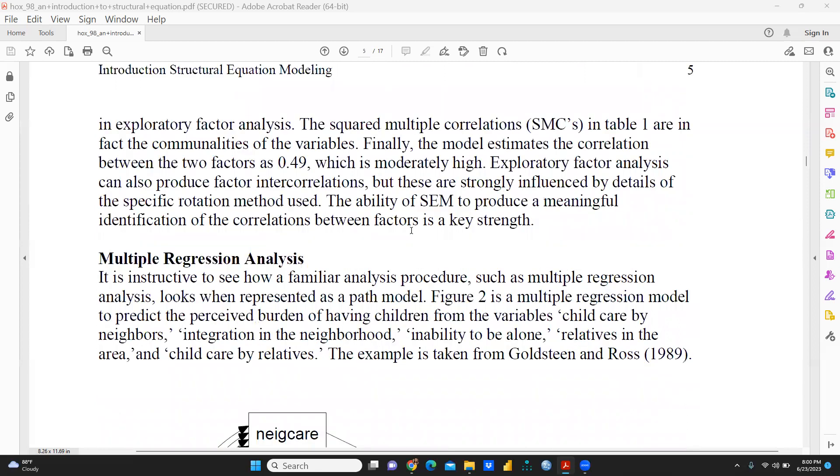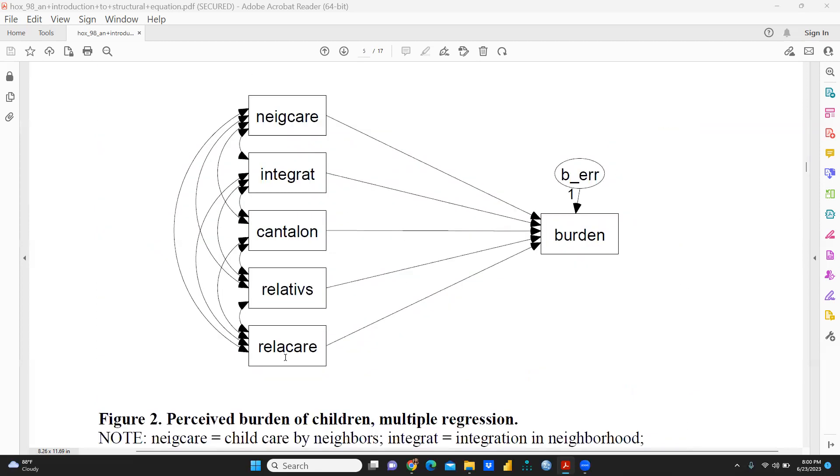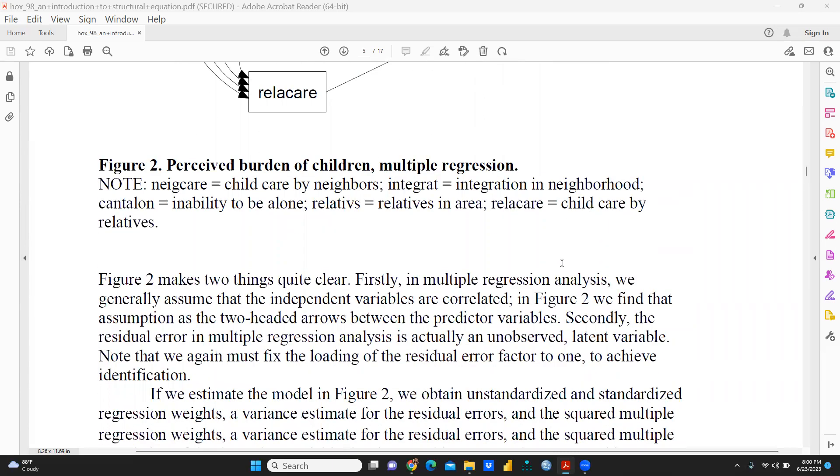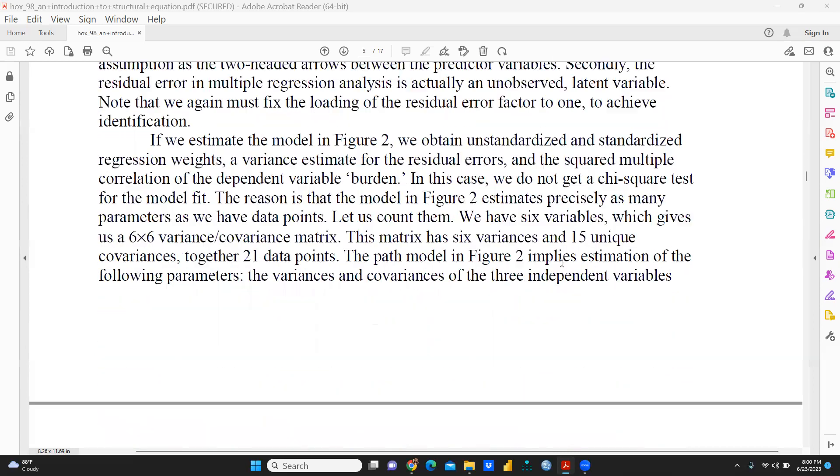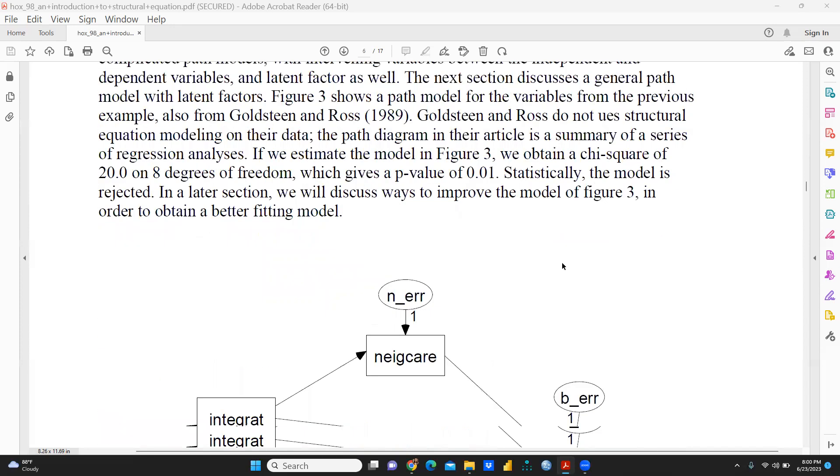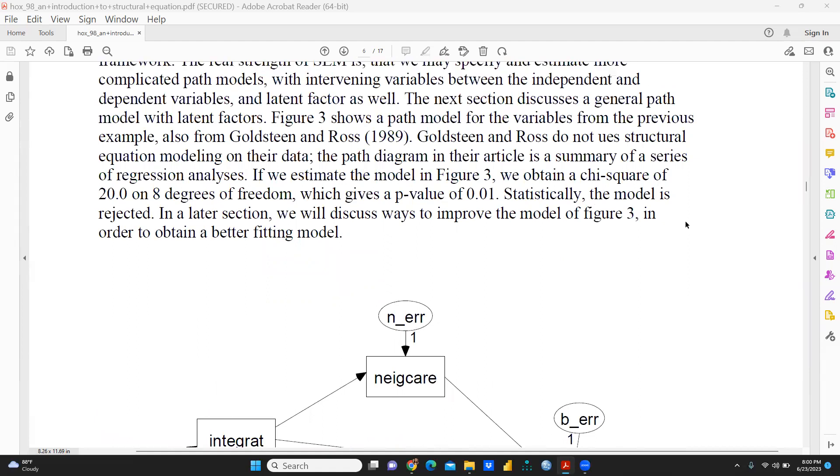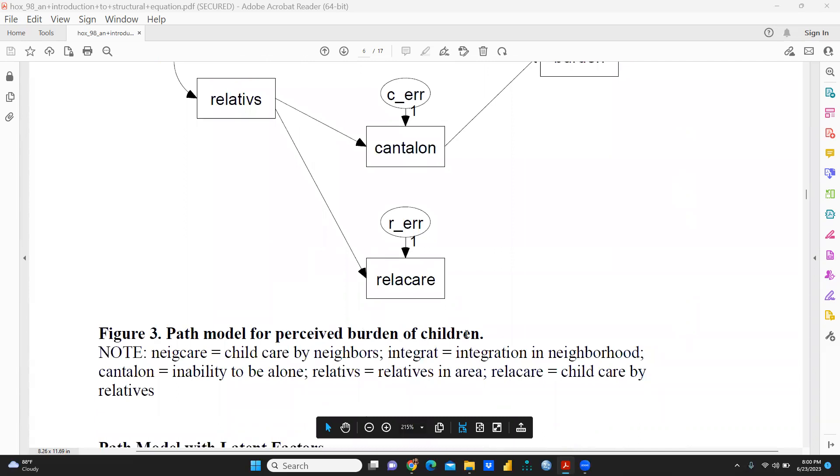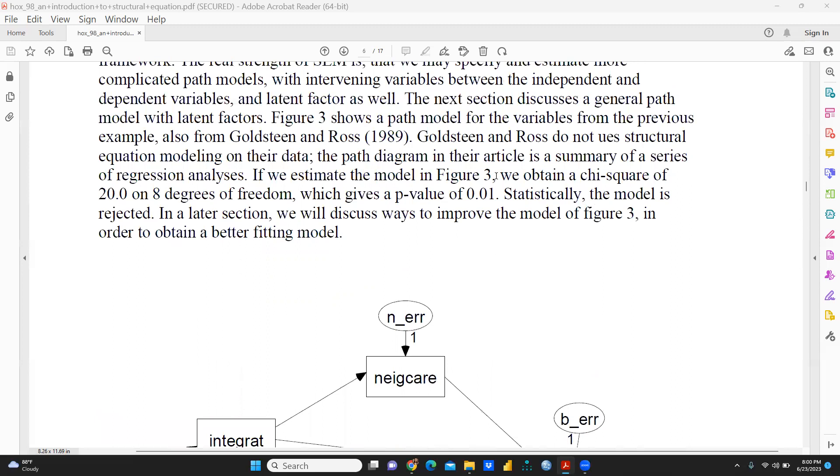Then we come to multiple regression analysis. You can see multiple regression analysis—that is, perceived burden of children. After that, you can see the proper explanation of this particular multiple regression. Then you can see here, this is Figure 3, explaining the path model for perceived burden of children. In this particular figure, the author obtained a chi-square of 20 on 8 degrees of freedom, which gives a p-value of 0.01.